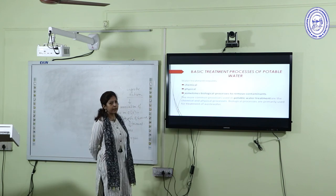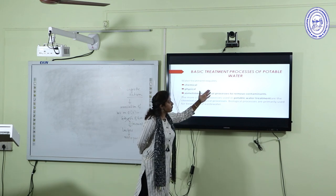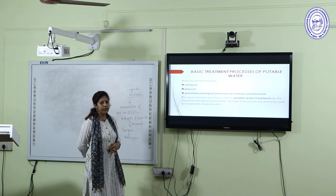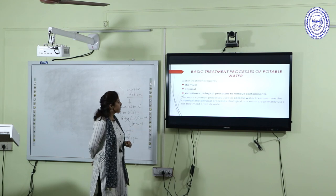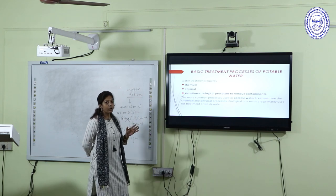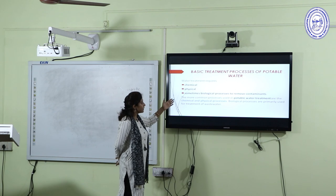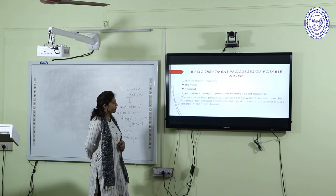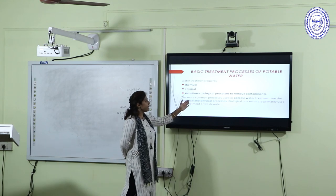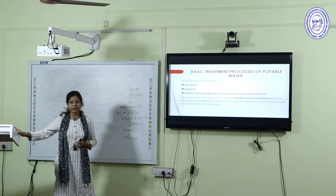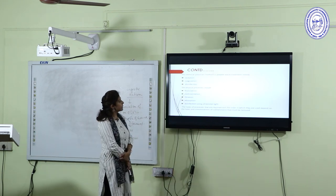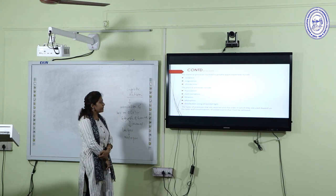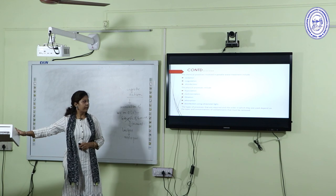For treatment of potable water, three major processes are used: chemical, physical, and sometimes biological. Chemical processes involve oxidation, coagulation, and disinfection. Physical processes involve flocculation, sedimentation, filtration, and disinfection using ultraviolet light. The selection and order of processes depends on the type and strength of contaminants present in water.